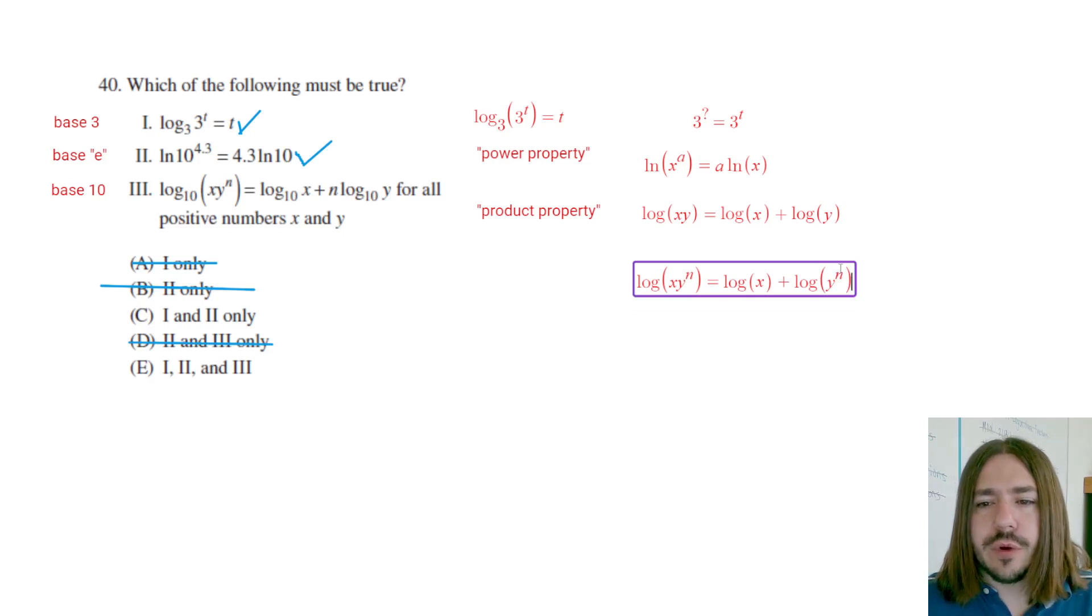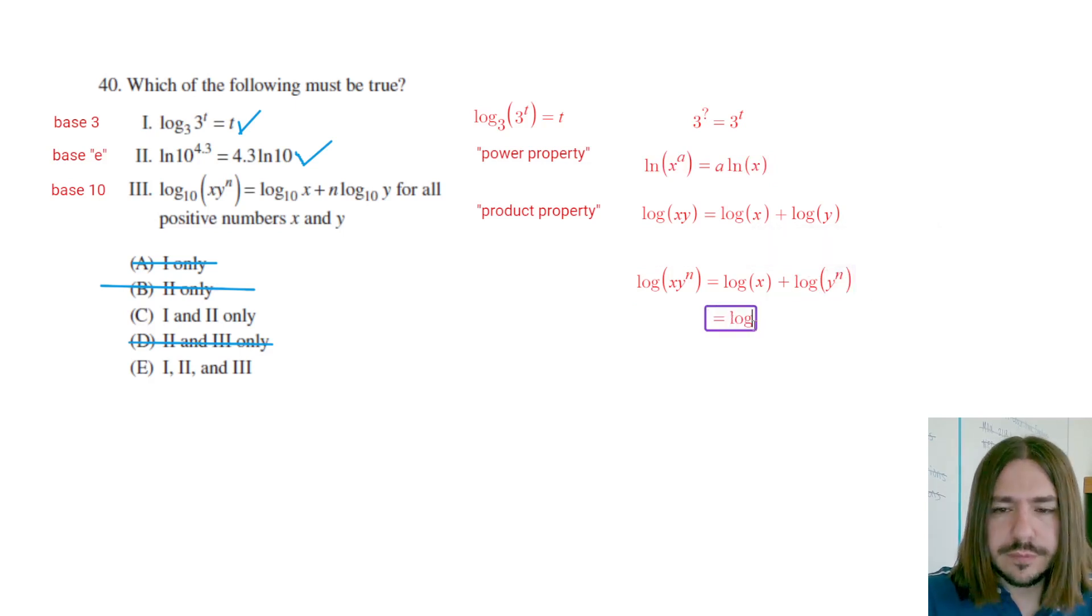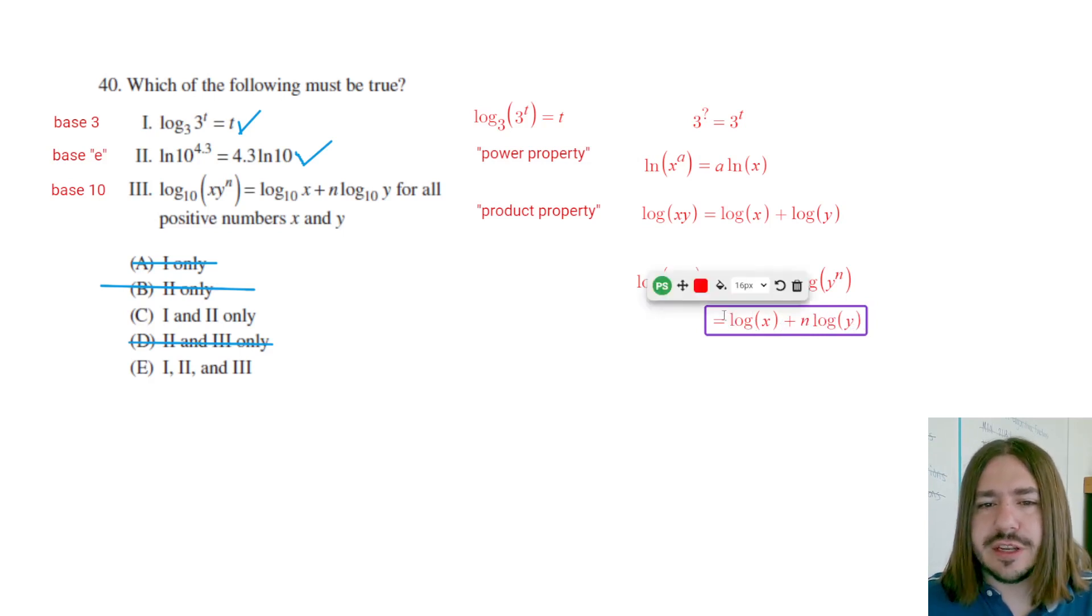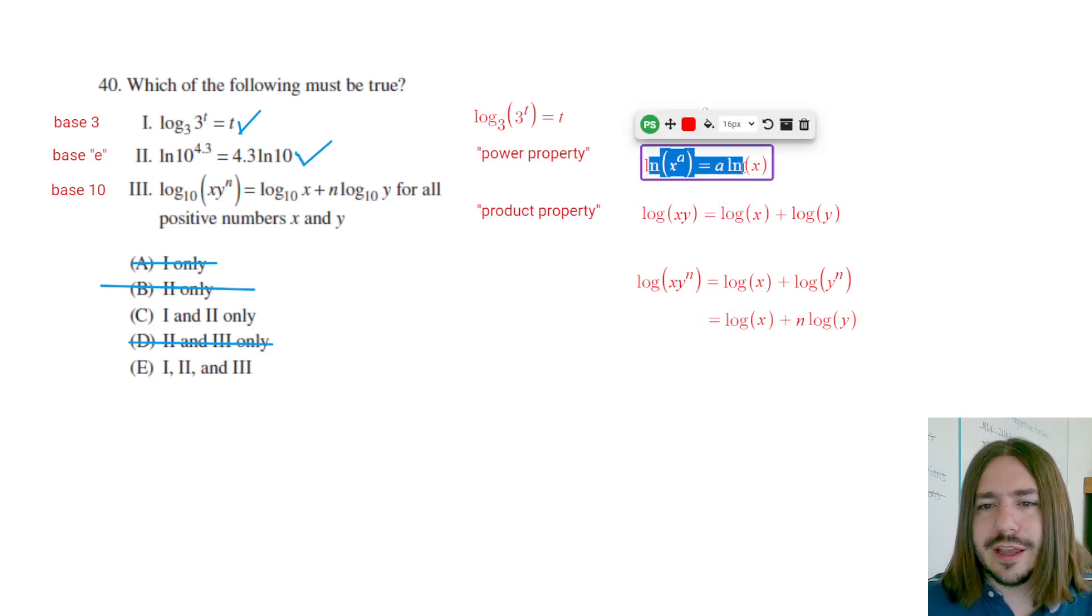And then I'm going to use the power property to bring this exponent down to be a coefficient of this logarithm. Now really, the power property, which I don't think is super obvious at first glance, is really just an extension of the product property. If you want to look at the proof, you can go find it in other places.